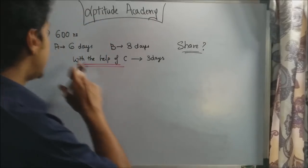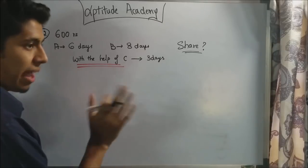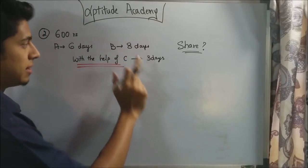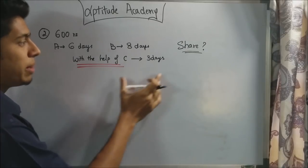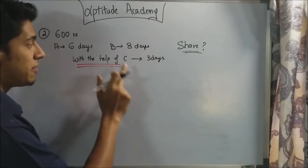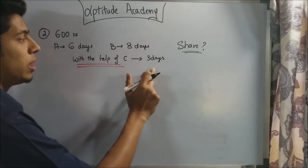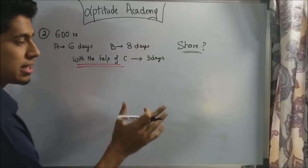Problem 2. A and B undertake to work for Rs. 600. If A works alone, he finishes in 6 days. If B works alone, he finishes in 8 days. With the help of C, they complete it in 3 days. This does not mean that if C works alone, he finishes in 3 days. It means that if A, B and C work together, then they finish in 3 days.